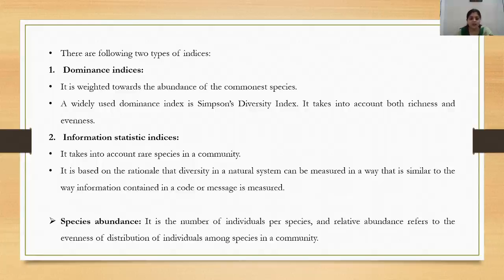Species abundance is the number of individuals per species, and relative abundance refers to the evenness of distribution of individuals among species in a community.